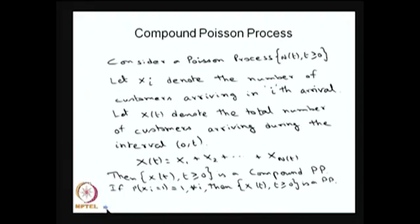The second one is the compound Poisson process. Using a Poisson process one can develop a more complicated stochastic process related to arrivals, called the compound Poisson process. Consider a Poisson process n(t), and define a random variable x_i to denote the number of customers arriving at the i-th arrival time point. So x_1 denotes how many arrivals take place at the first arrival time point, and x_2 denotes how many arrivals take place at the second.